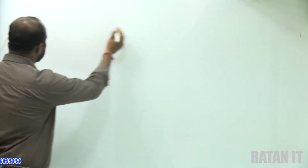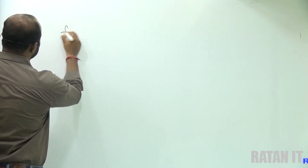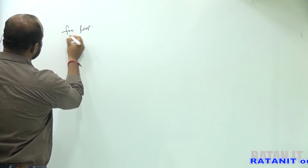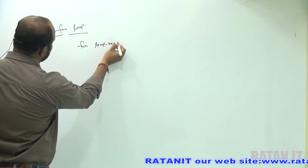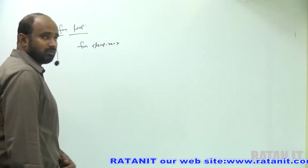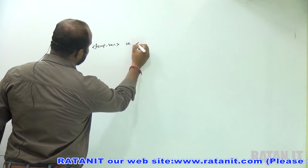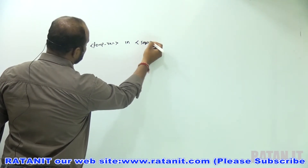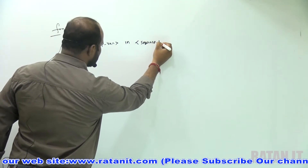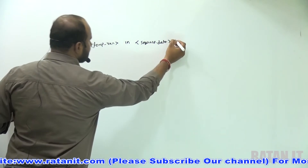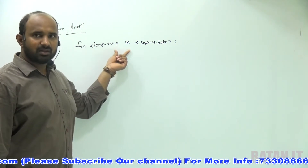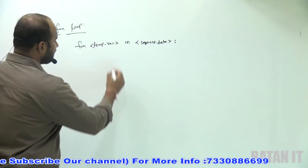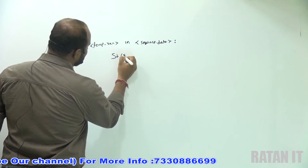Tell me here, what is the syntax of for loop in Python? Coming to the for loop, the syntax is: for temporary variable in sequence data or iterable data. Then you write the statements inside the loop.